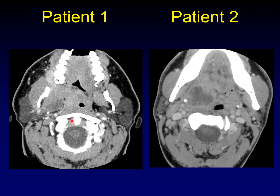In patient 1, we're going to use the parapharyngeal fat to help us decide where this cystic lesion came from. We talk about displacement of the parapharyngeal fat helping us to decide the origin of lesions in this location. But here, the parapharyngeal fat has not been displaced. There is parapharyngeal fat all the way around the outside of the lesion.